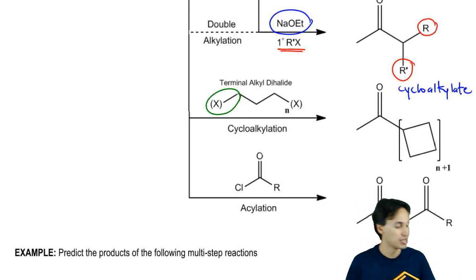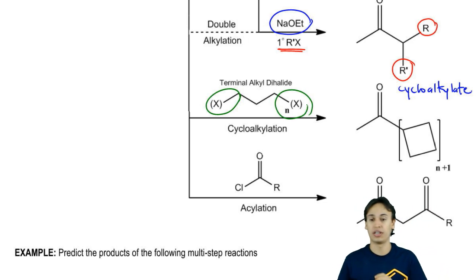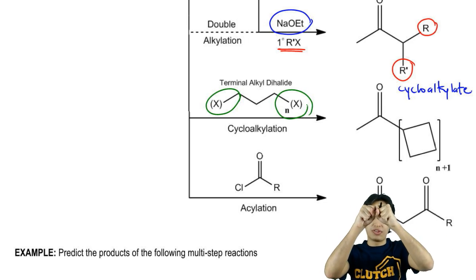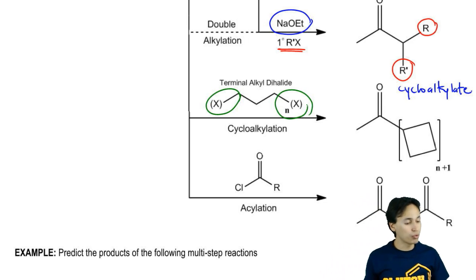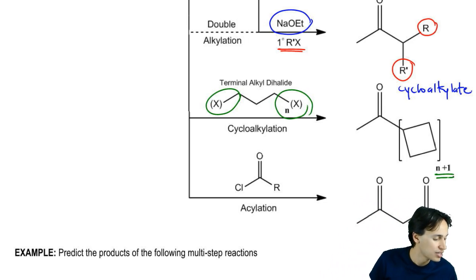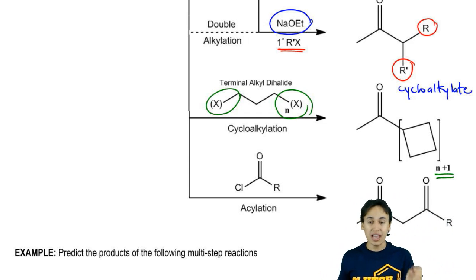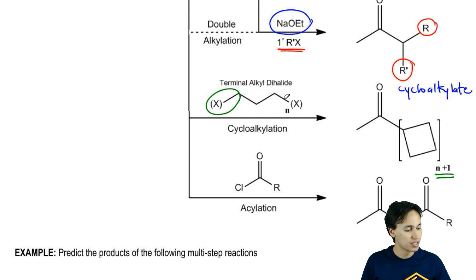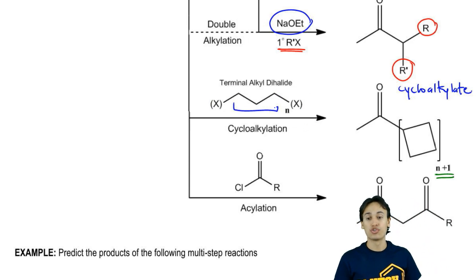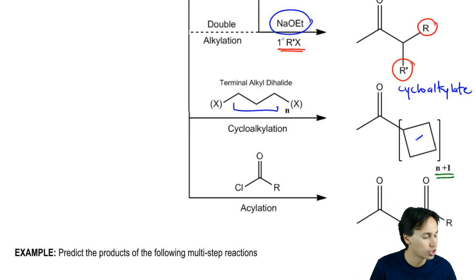then react another equivalent of base, then react with the other side of your alkyl halide. That's going to form a ring around the alpha carbon. You're going to get a ring with a size of N plus 1 where N is equal to the number of carbons in between in your chain. If you reacted with a three-carbon dihalide, you're going to get a four-carbon chain.